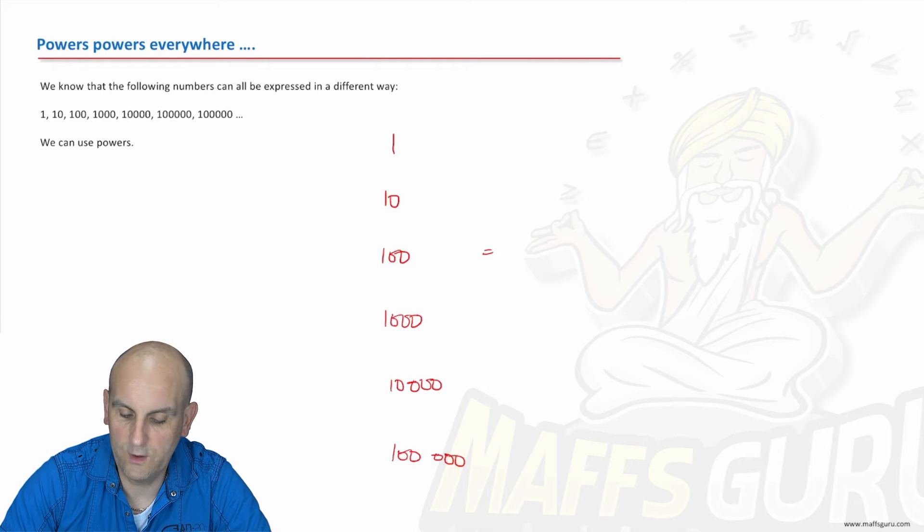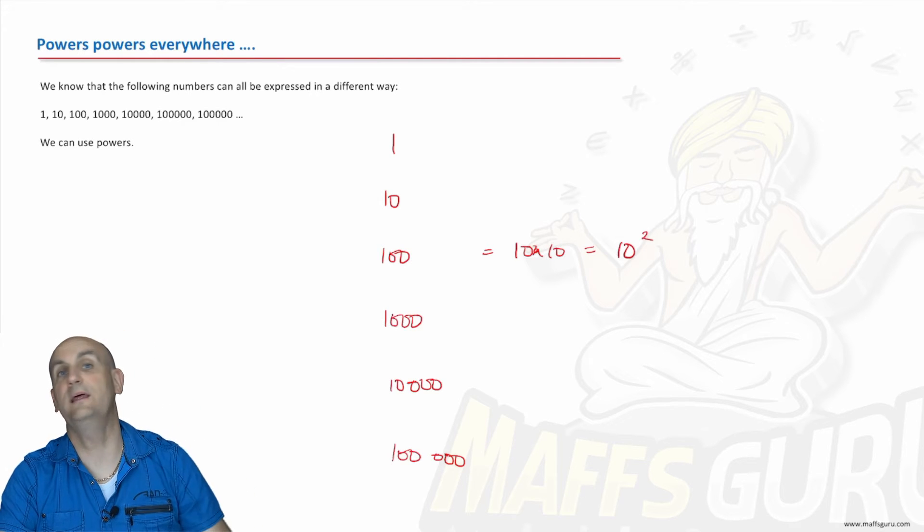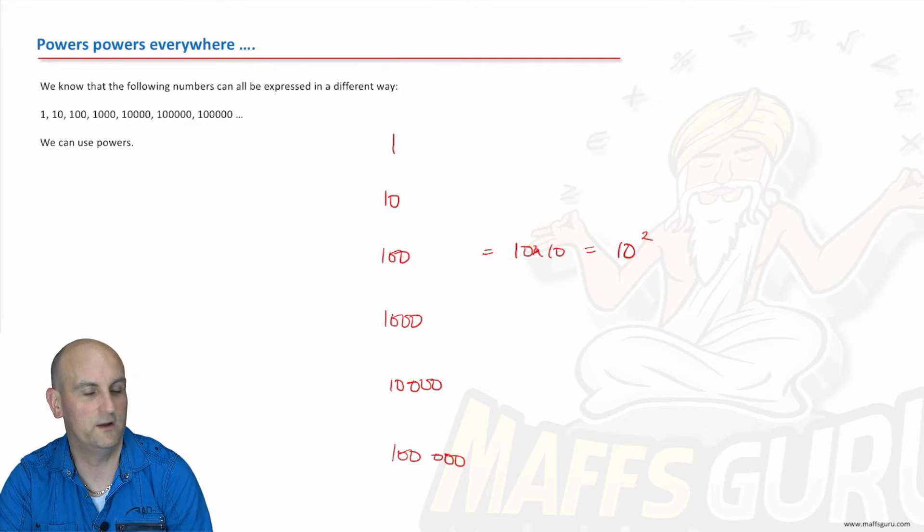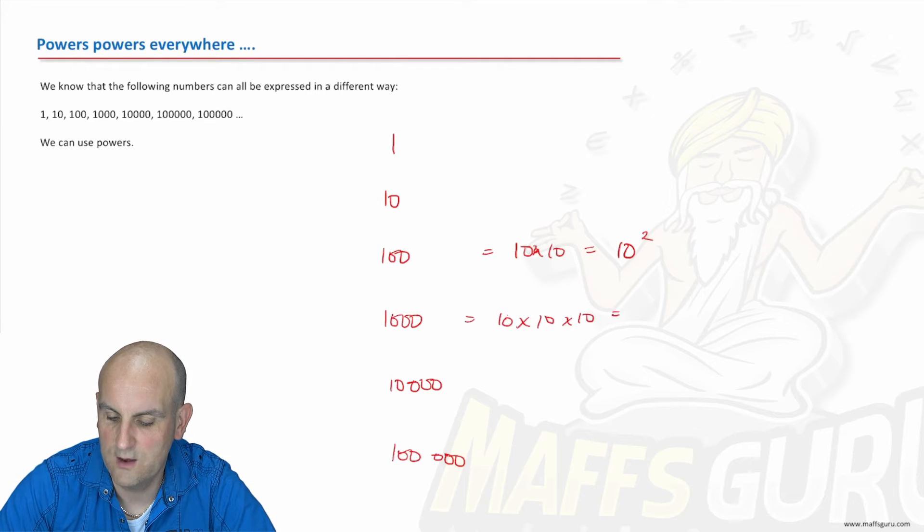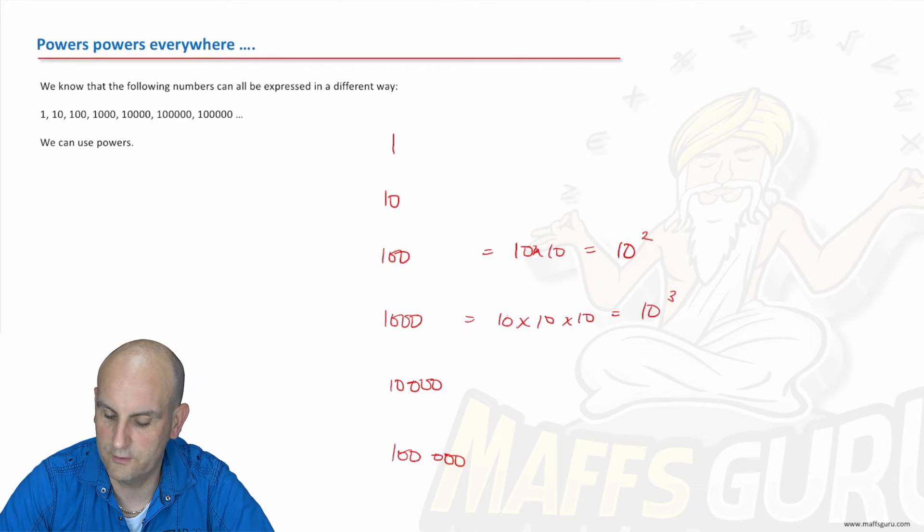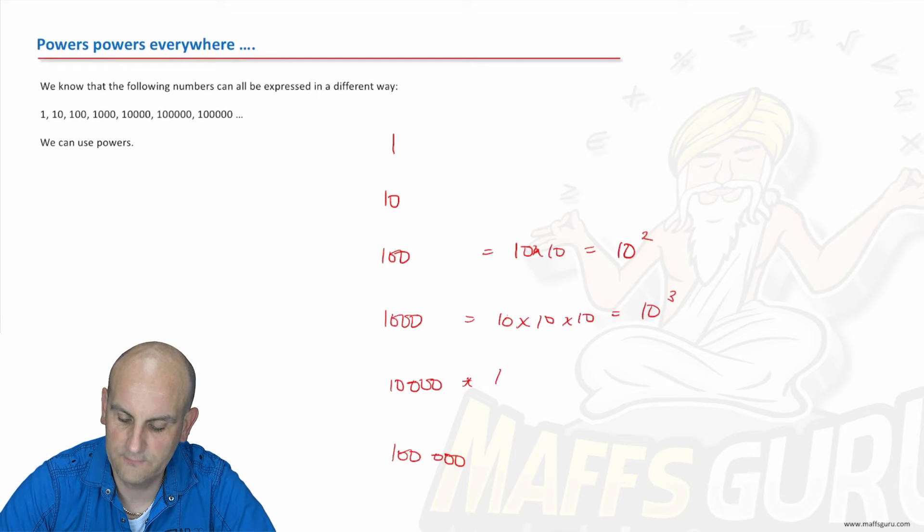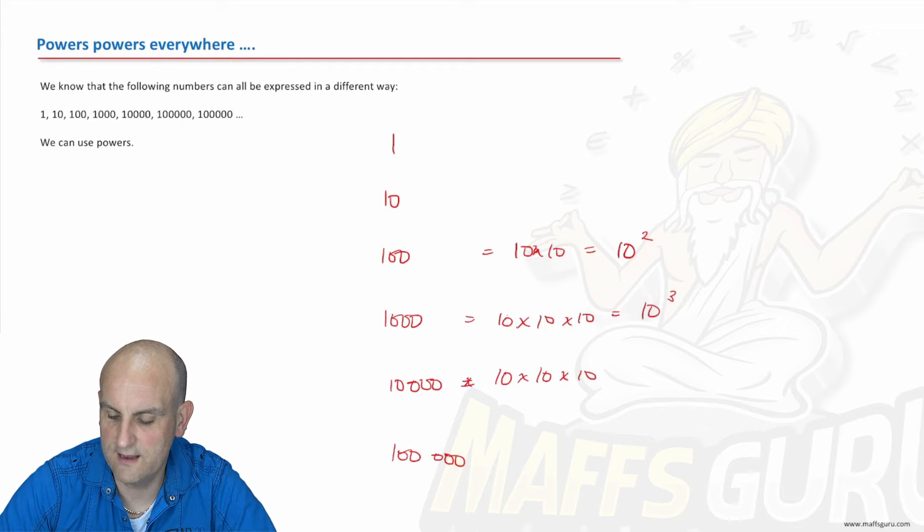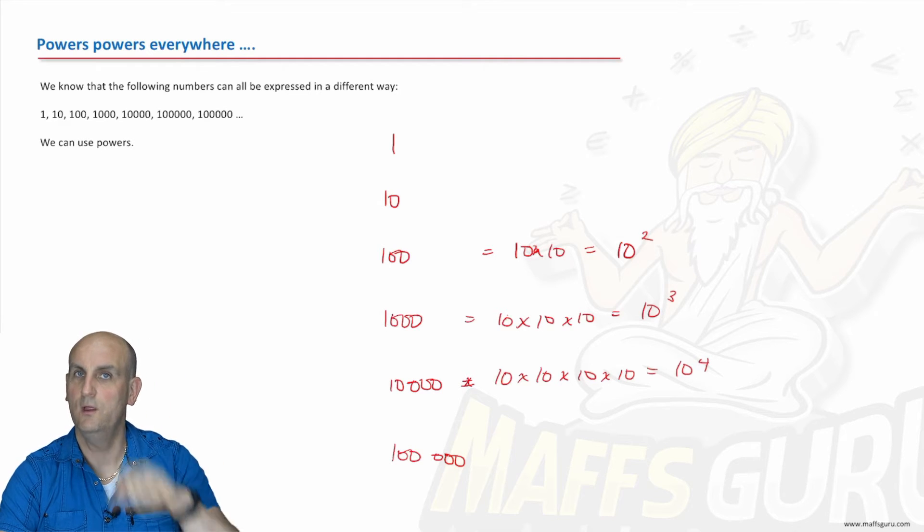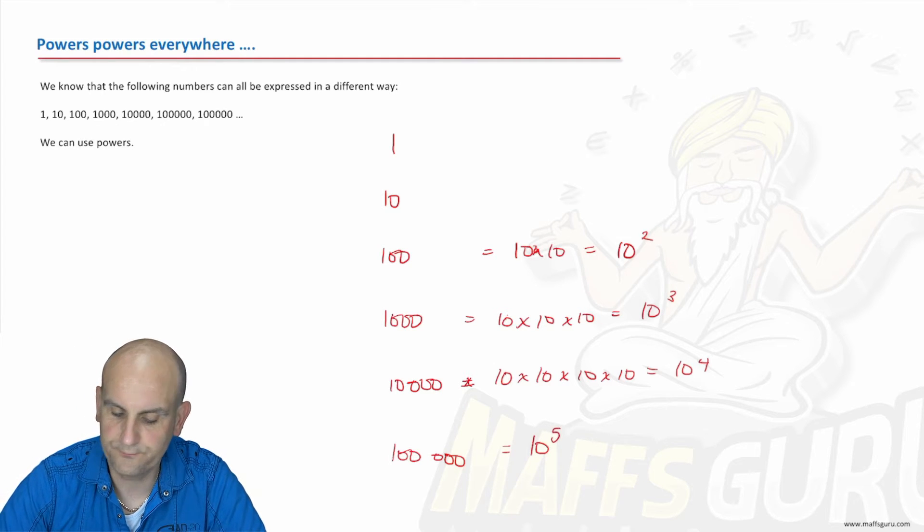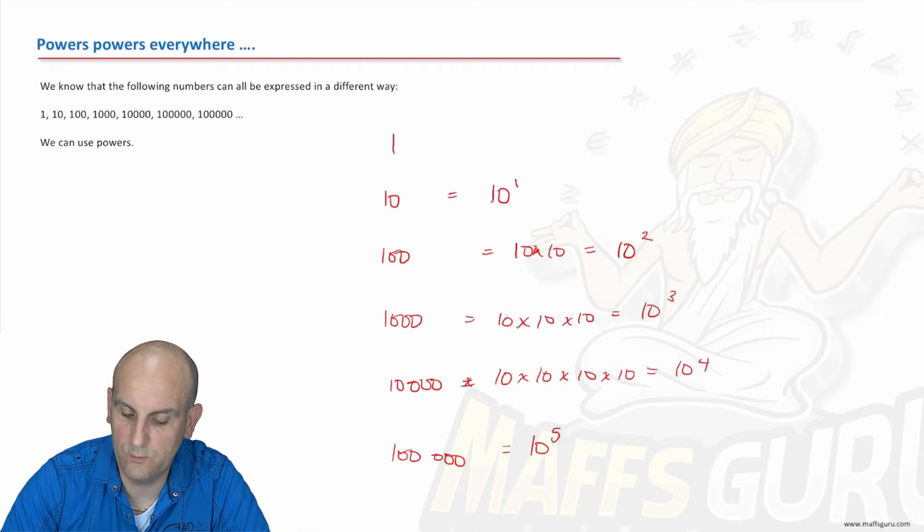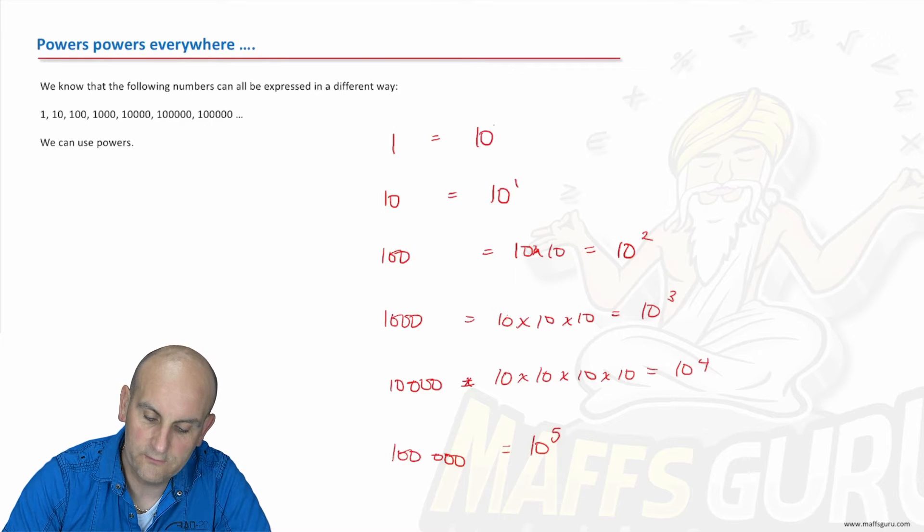Now, basically, we know we can write 100 as 10 times 10 or 10 with a floaty 2. So I call floaty numbers or powers floaty numbers. How about 1,000? Well, we know that that's 10 times 10 times 10, which can be written as 10 to the floaty 3. Hold on a moment. I'm seeing a pattern.